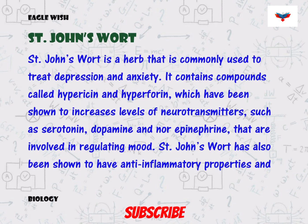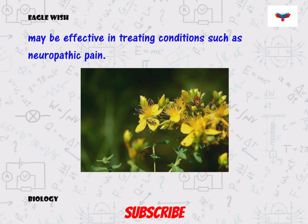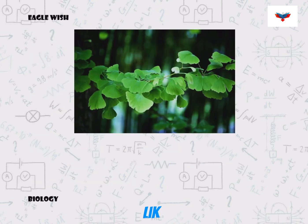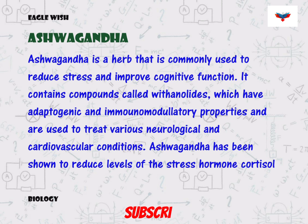Another medicinal herb is St. John's Wort, which is used to treat depression and anxiety. Ginkgo is a tree used to improve cognitive function and memory, and it also helps in improving blood flow. Ashwagandha is a herb used to reduce stress and to treat neurological and cardiovascular conditions.